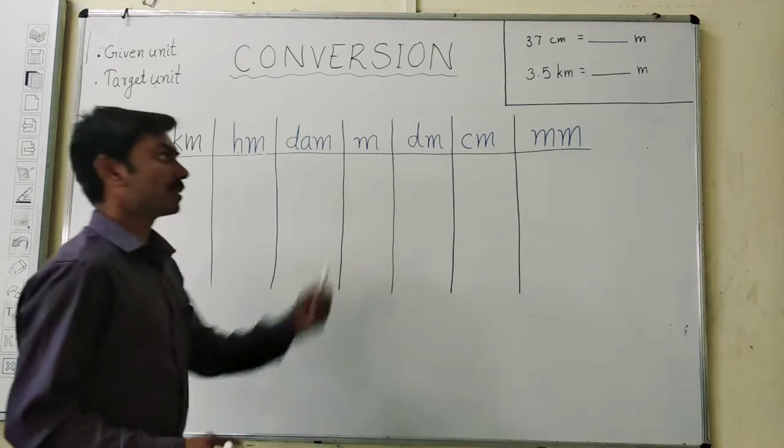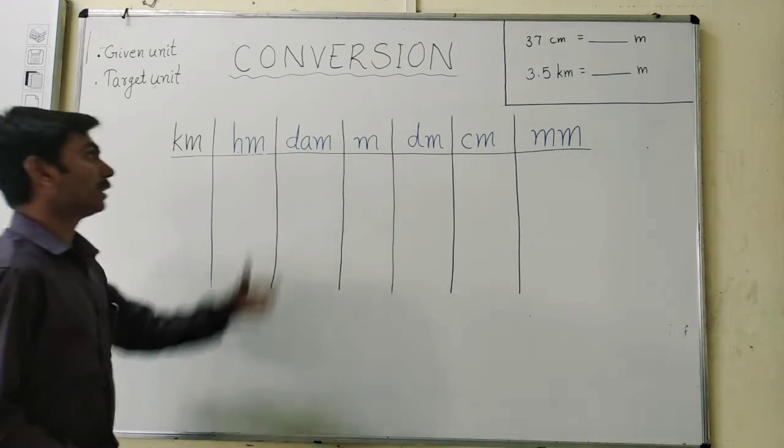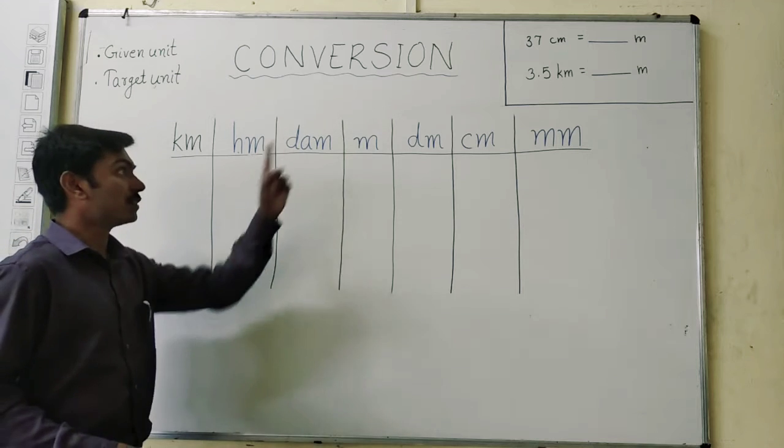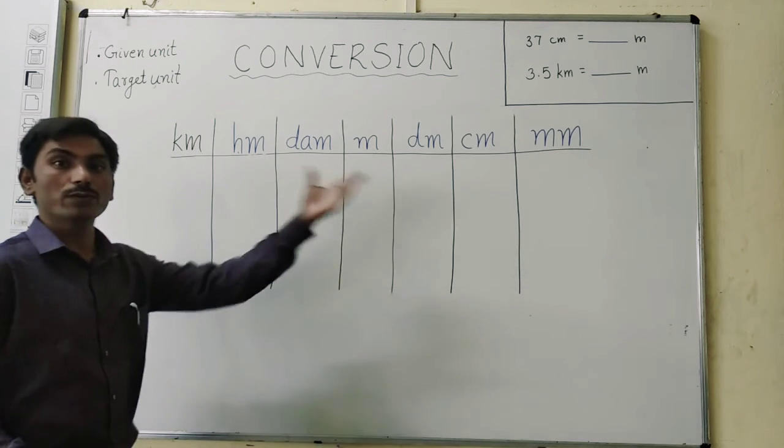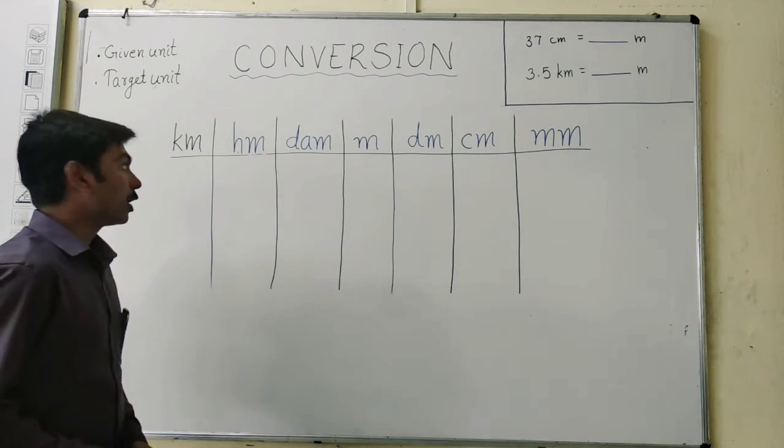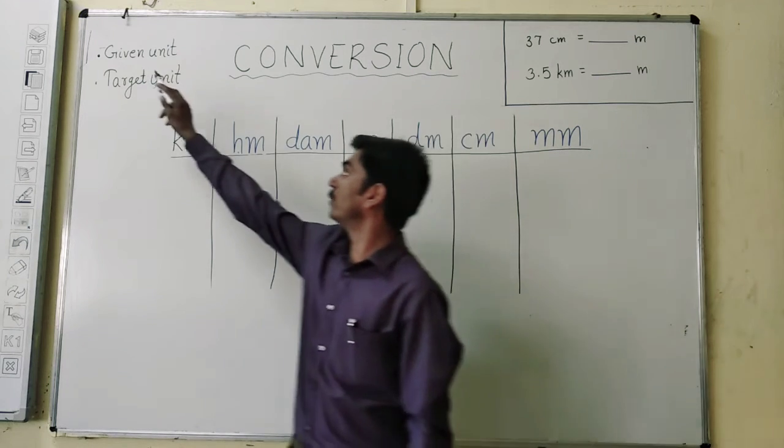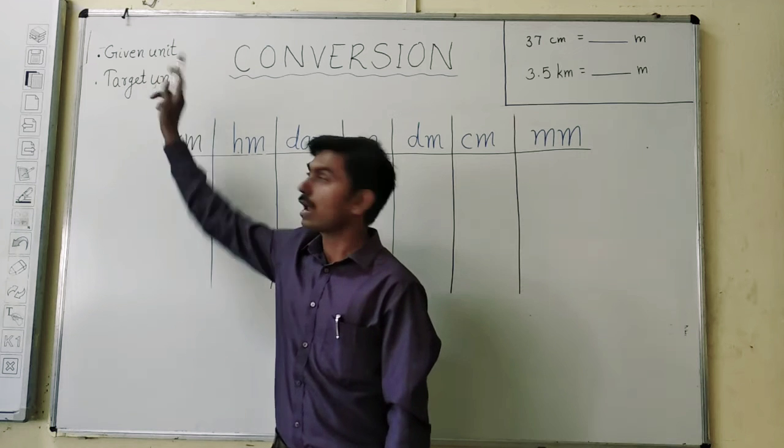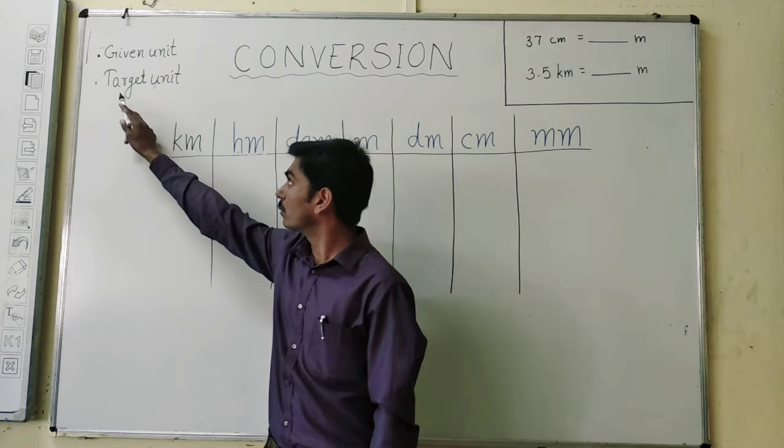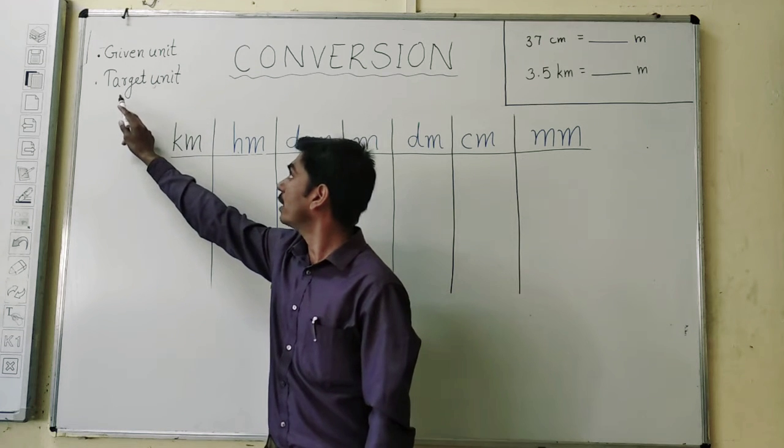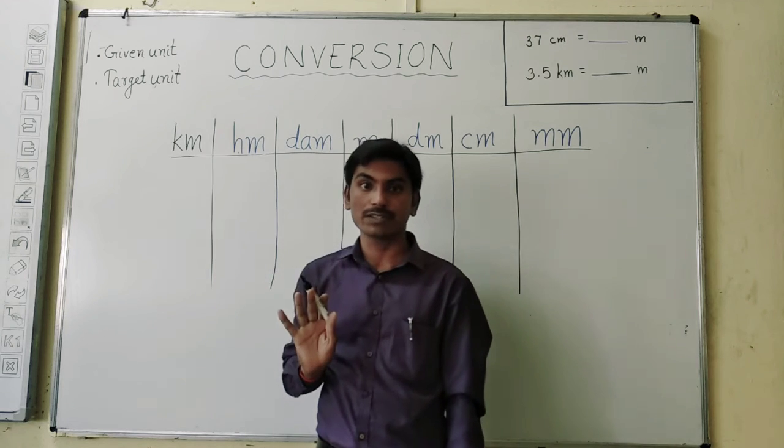Hello students, in this session let us see how we can convert any unit using its decimal form from one unit to another. Here we are going to use two terms. First keyword will be given unit and the other keyword will be target unit. This we have to understand clearly.